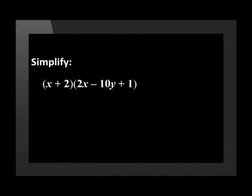Simplify (x + 2)(2x - 10y + 1). We can see that the first bracket is a binomial since there are two terms in the bracket. The second bracket consists of three terms and is a trinomial.